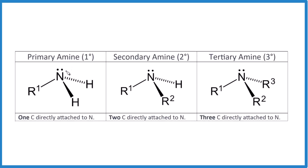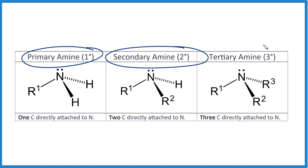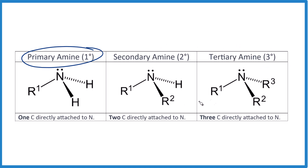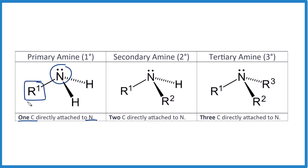In this video, we're going to learn about primary amines, secondary amines, and tertiary amines. For the primary amine, we have one carbon directly attached to that nitrogen. Here's our nitrogen — we have a lone pair, and this R represents the carbon or a group of carbons. The key is there's only one of them attached to that nitrogen.